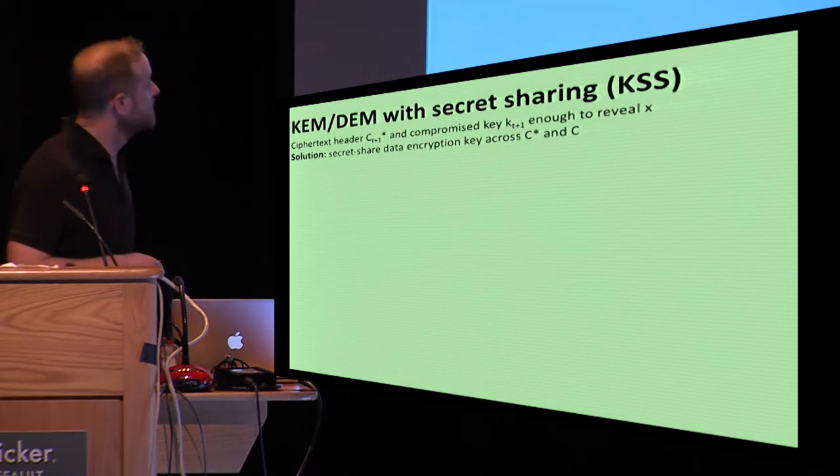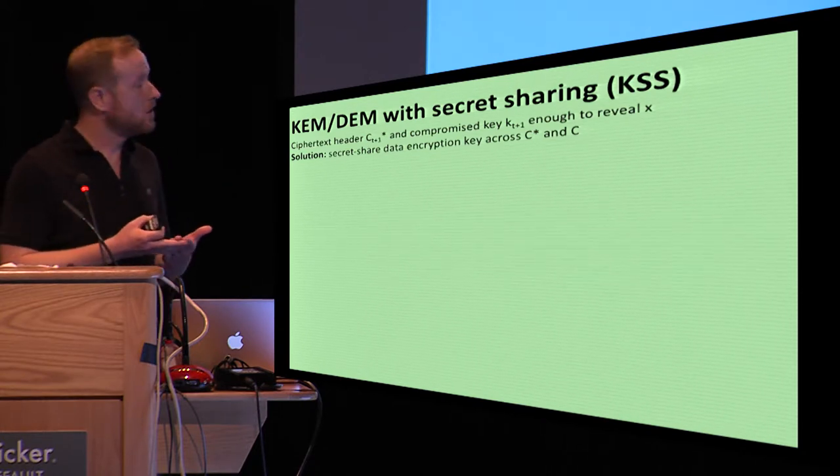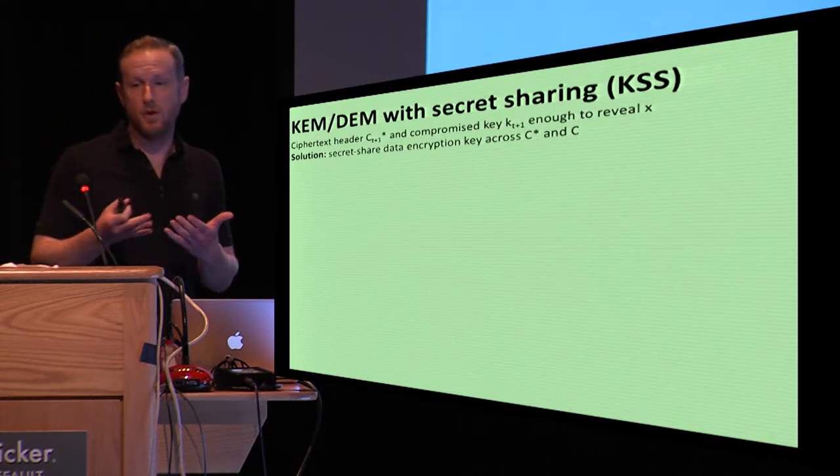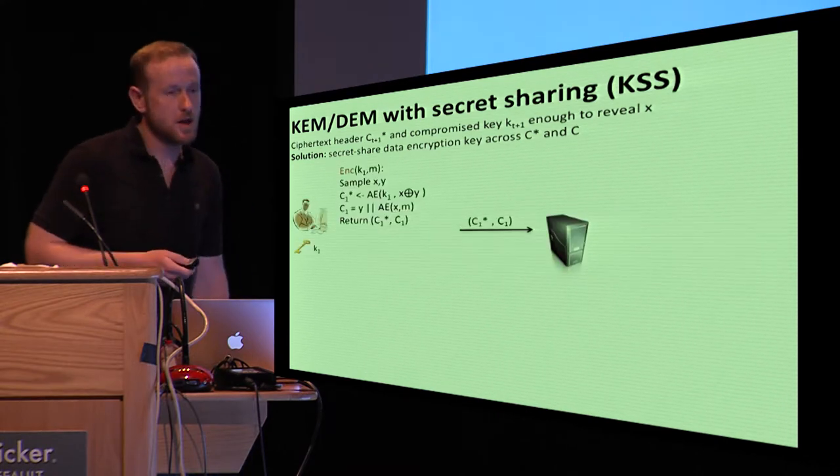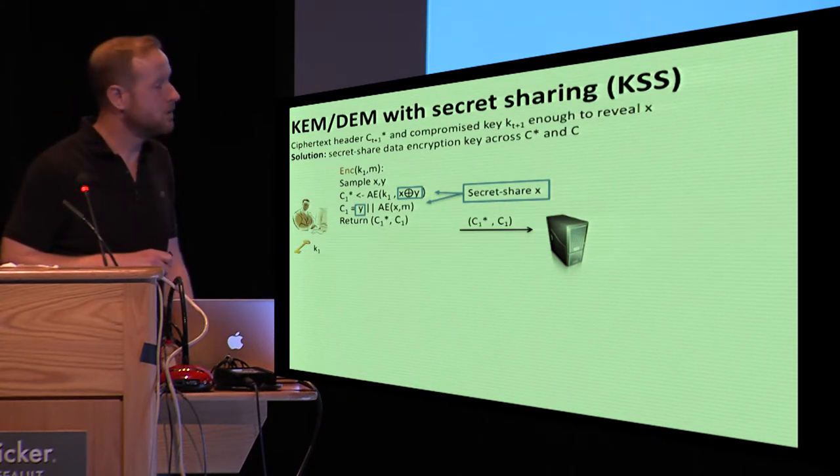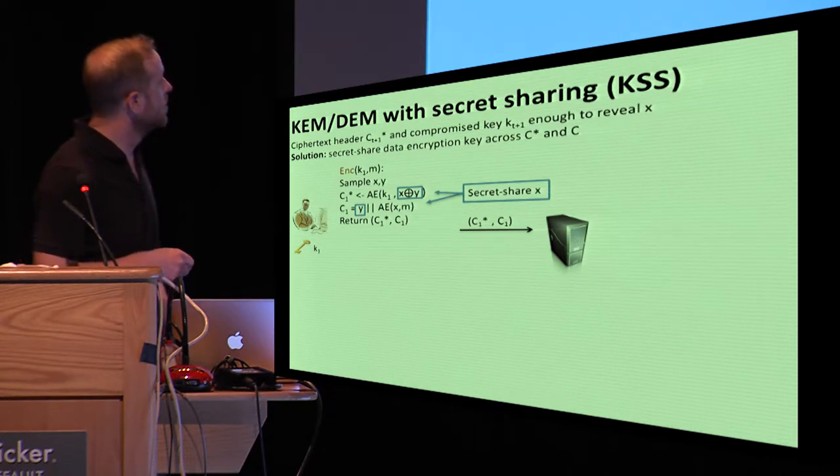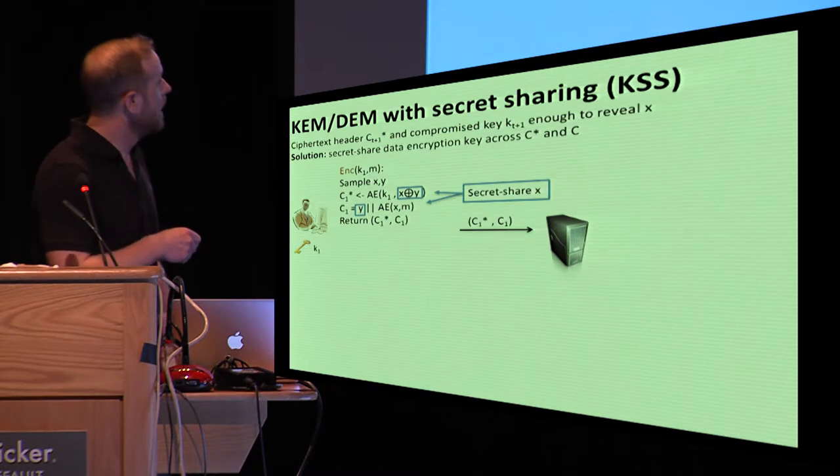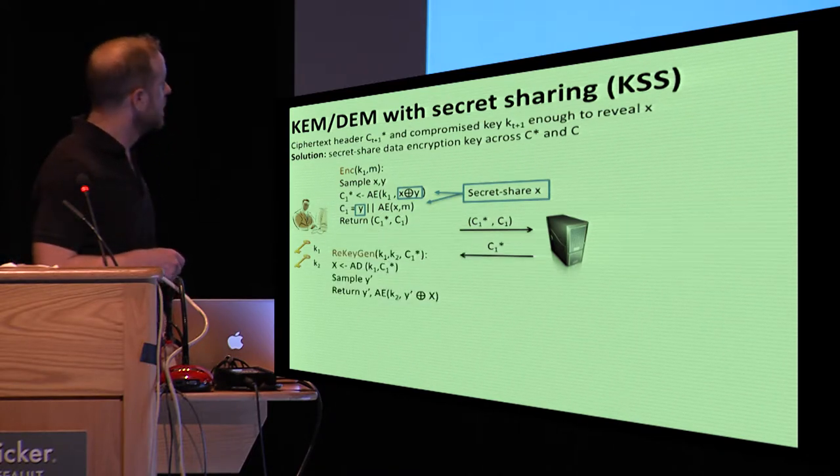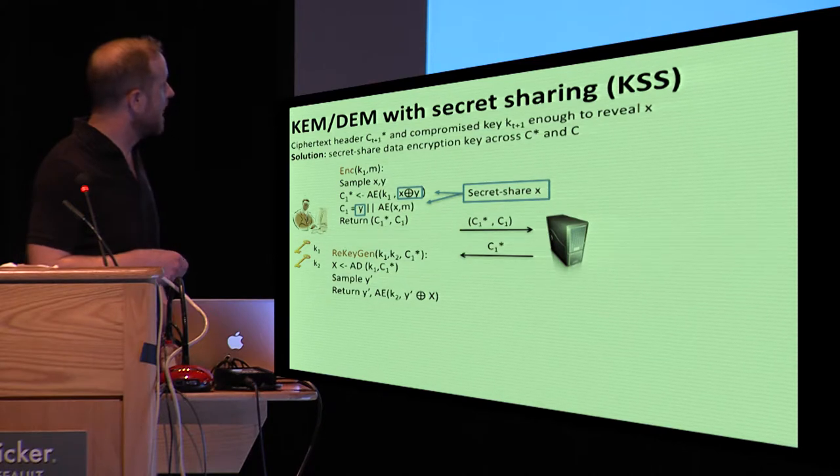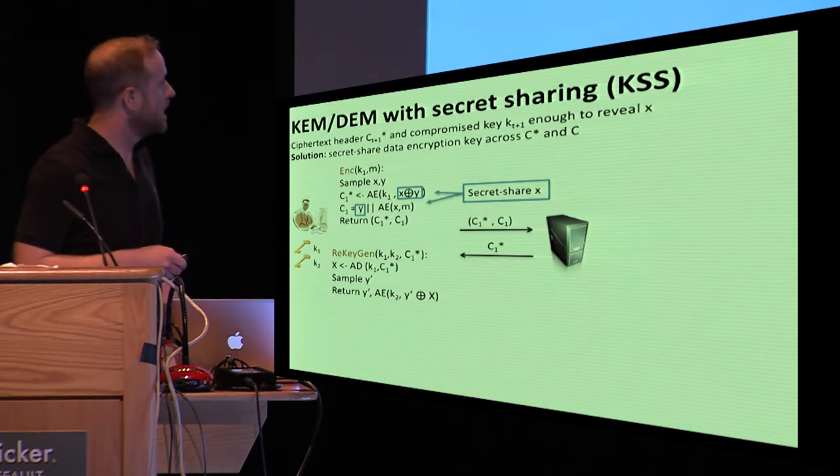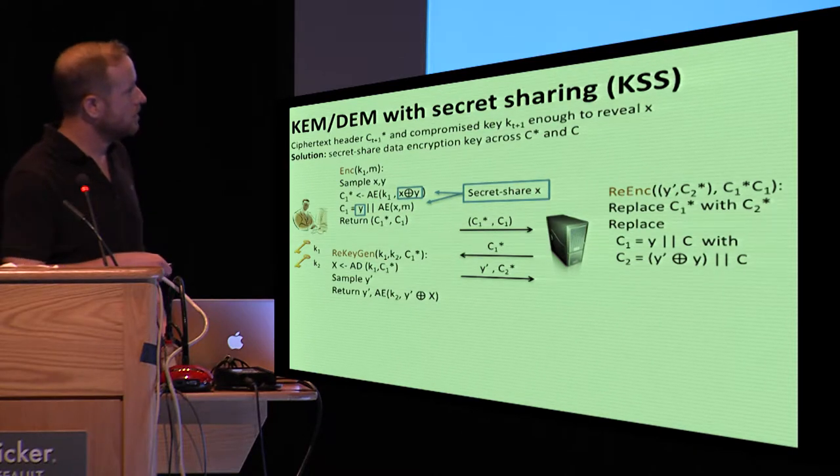So that change is what we call a KEM-DEM with secret sharing. The basic problem with the security in our model from before is that if you get this compromised header, a header for a compromised key, that's enough to reveal the data encapsulation key completely. What we can do is prevent that by doing a kind of secret share of the data encapsulation key across the two portions of the ciphertext. So now we sample an X and a Y. We store inside the key encapsulation an X XORed Y and store Y with the other portion of the ciphertext. This is just a simple secret sharing scheme. When we do rekey generation, we can get back the header, decrypt it to get back this X XORed Y. We can sample new Y-prime, kind of refresh the secret share by XORing Y-prime into X, sending Y-prime as well over to the storage service and refreshing on that side as well.